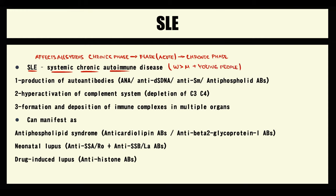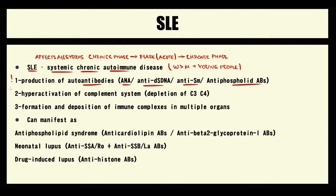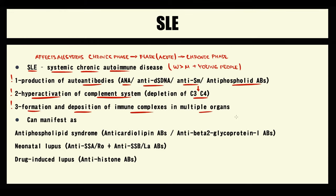Lupus has three major pathogenic mechanisms. The first is production of autoantibodies — mostly antinuclear antibodies, anti-double-stranded DNA antibodies, anti-Smith antibodies, and antiphospholipid antibodies. The second pathogenic mechanism is related to hyperactivation of the complement system, which causes depletion of C3 and C4 complement components. Production of autoantibodies and activation of complement system results in formation of immune complexes, and their progressive deposition in tissues causes severe injury.